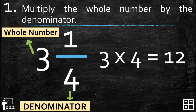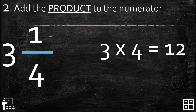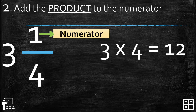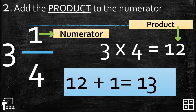Three multiplied by four gives us 12. Now let's proceed to step two: add the product to the numerator. The numerator is always on the top of the fraction. In our example, the numerator is 1 and the product is 12, so 12 plus 1 gives us 13.